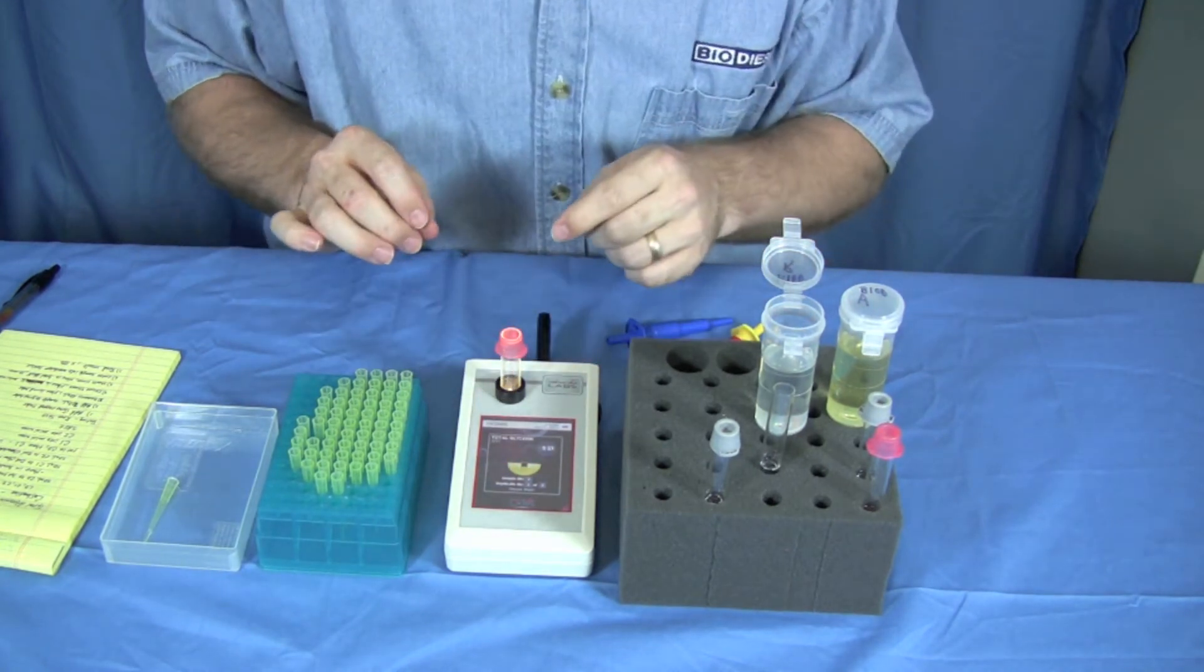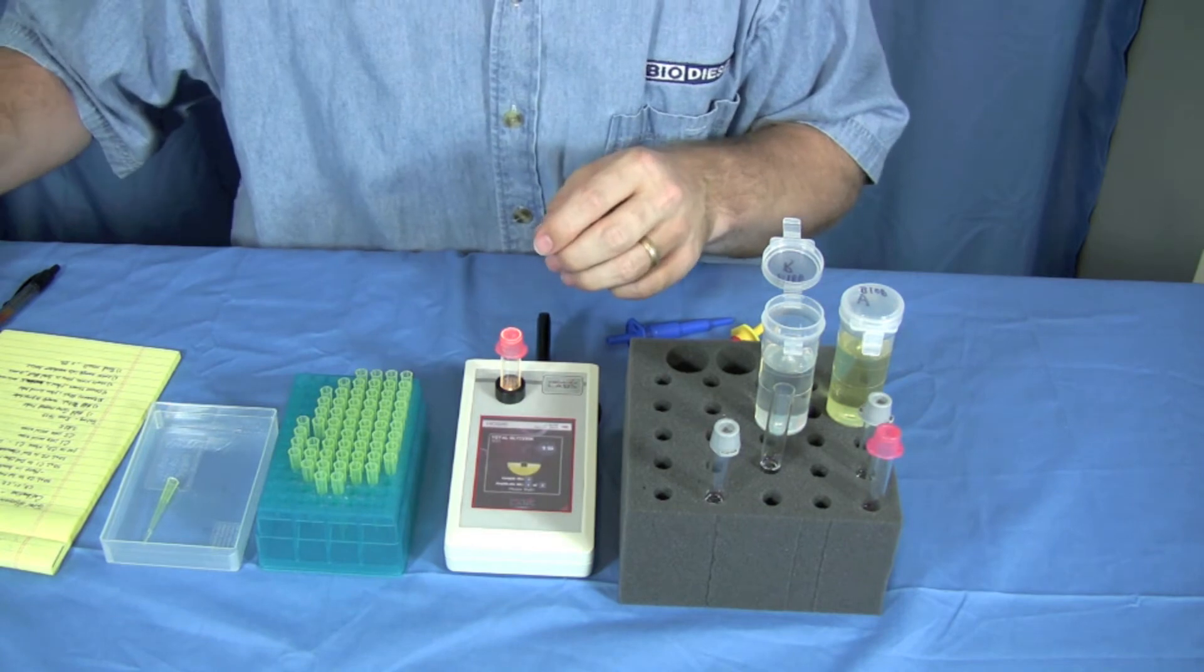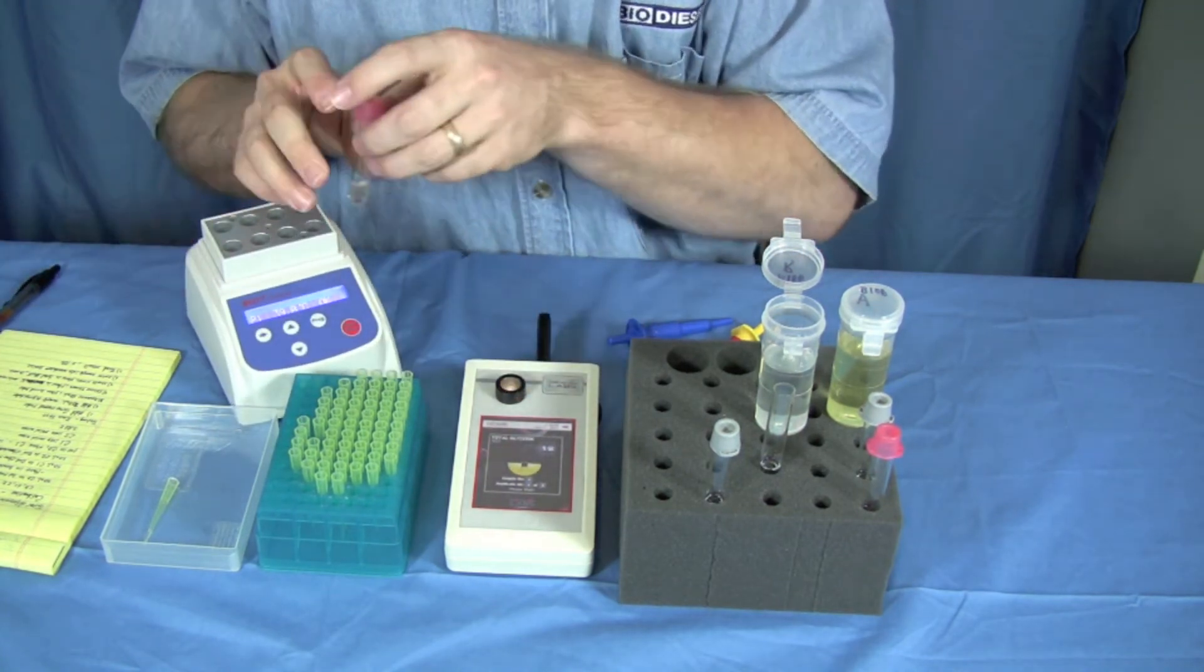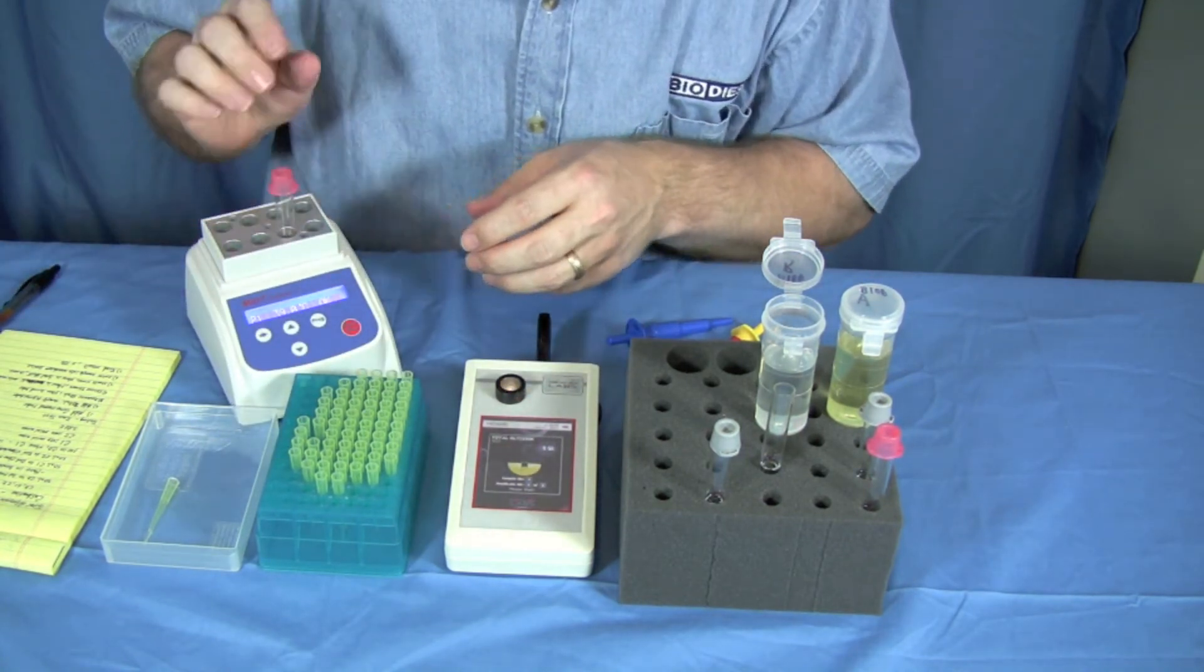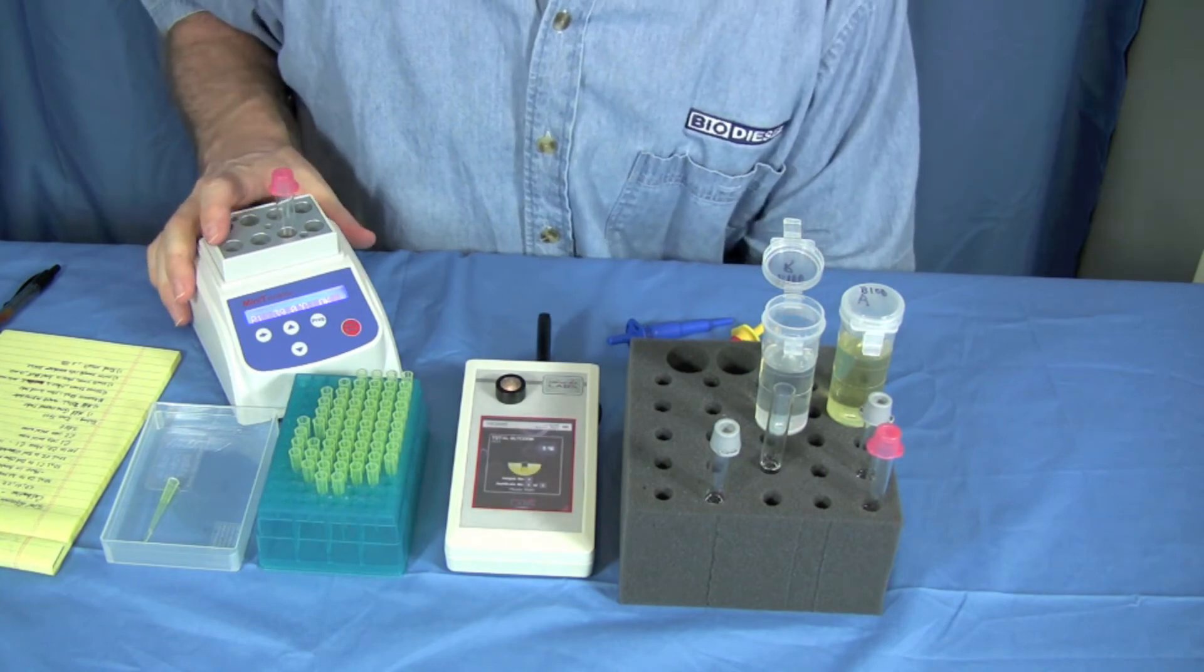And now it's asking us to wait ten minutes. So we're going to remove it. This is where our heating block comes into play. The machine is now going to count down for ten minutes.